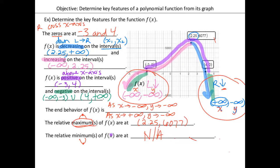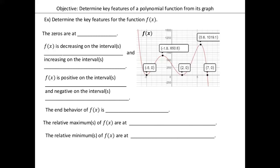Next example — I kind of basically did this one, so for the next one I'm going to ask you guys more questions than the previous one. So for the next example here, we have the zeros again. Zeros — remember, it's where we cross the x-axis. So let me ask the class — what are the zeros here? So Joseph, can you tell us the zeros? Negative five, two, and seven. Awesome.